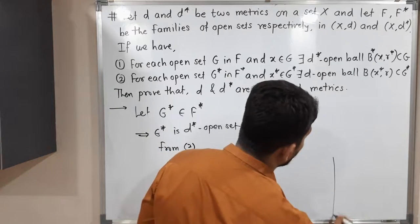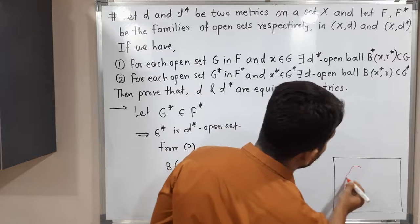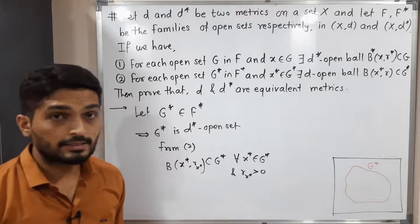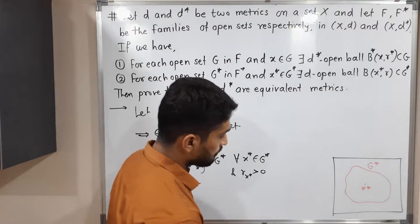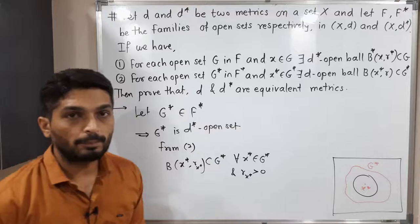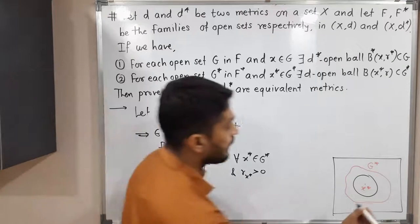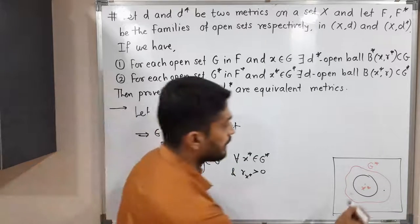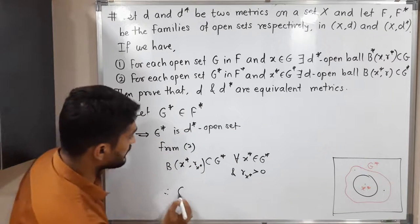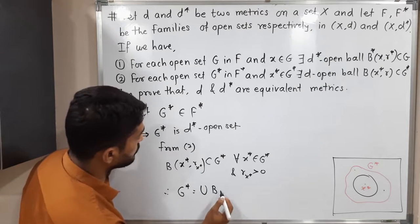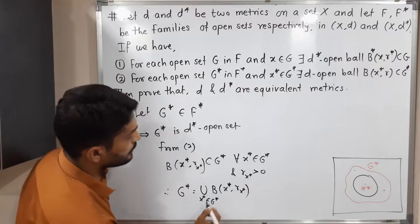In the diagram, we have set X with two metrics D and D*. We are talking about G*, which is a D*-open set. This information says: if you have any point x* in G*, we can definitely find one D-open ball which is a subset of G*. This is true for every x* belonging to G*. Whether x* is anywhere in G*, it is always possible to find a ball around it.